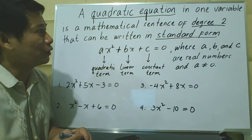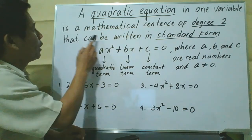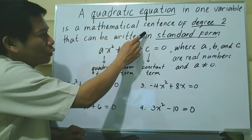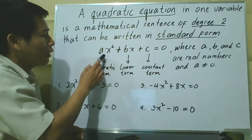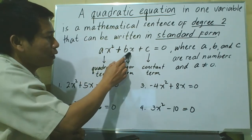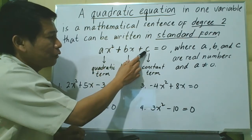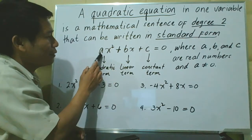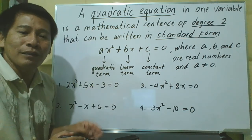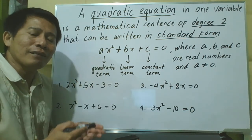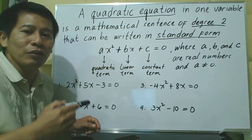Let's start with the definition. A quadratic equation in one variable is a mathematical sentence of degree 2 that can be written in standard form: ax squared plus bx plus c equals 0, where a, b, and c are real numbers and a is not equal to 0. A quadratic equation is any equation of degree 2, or second degree.